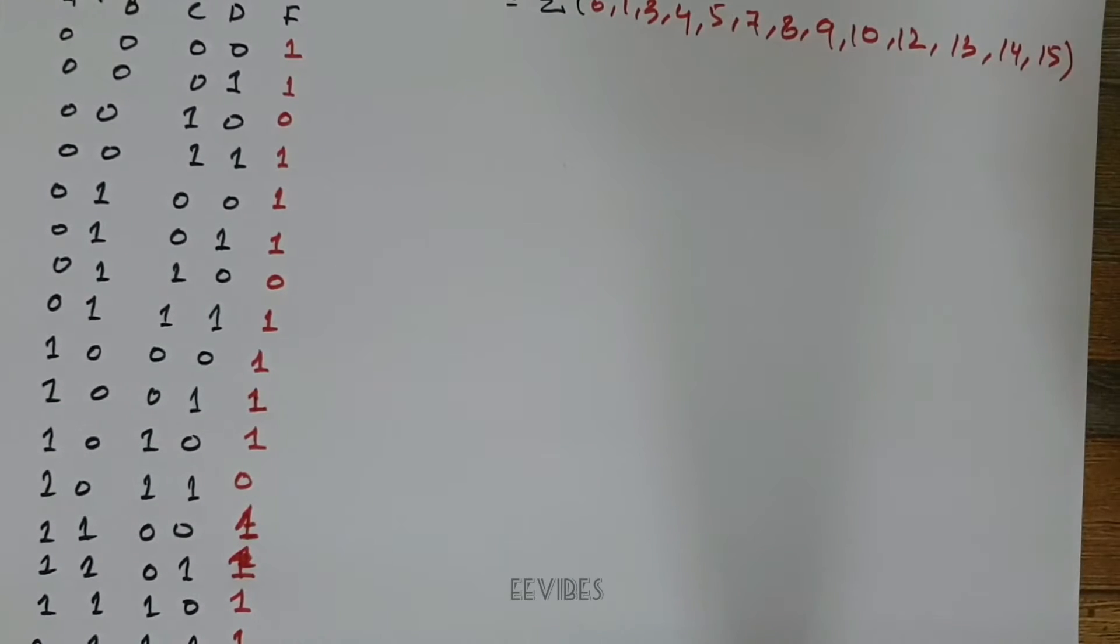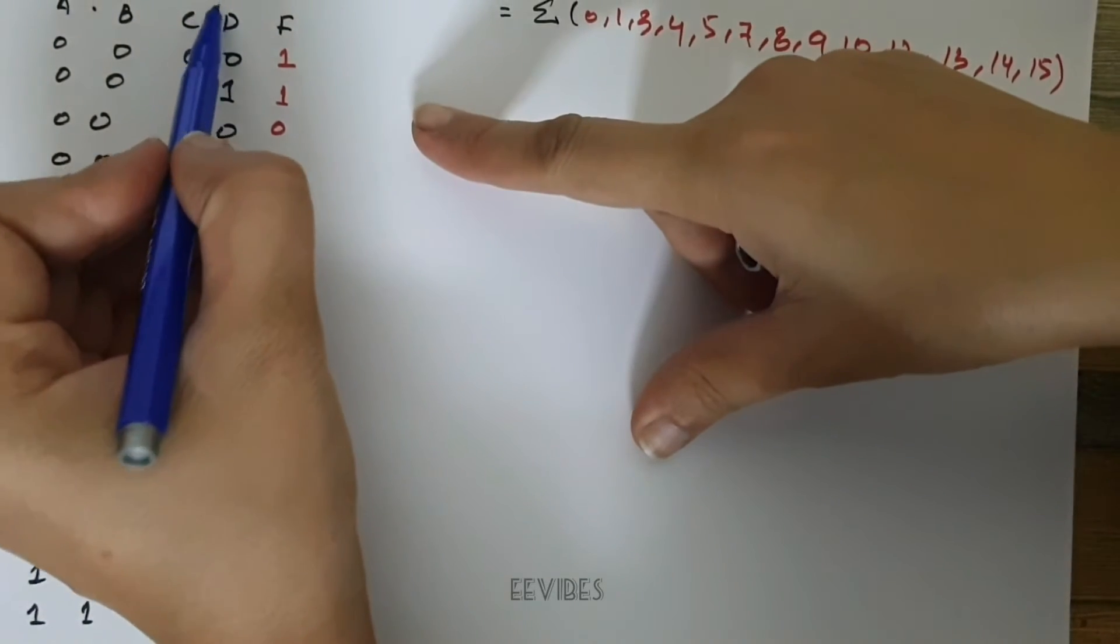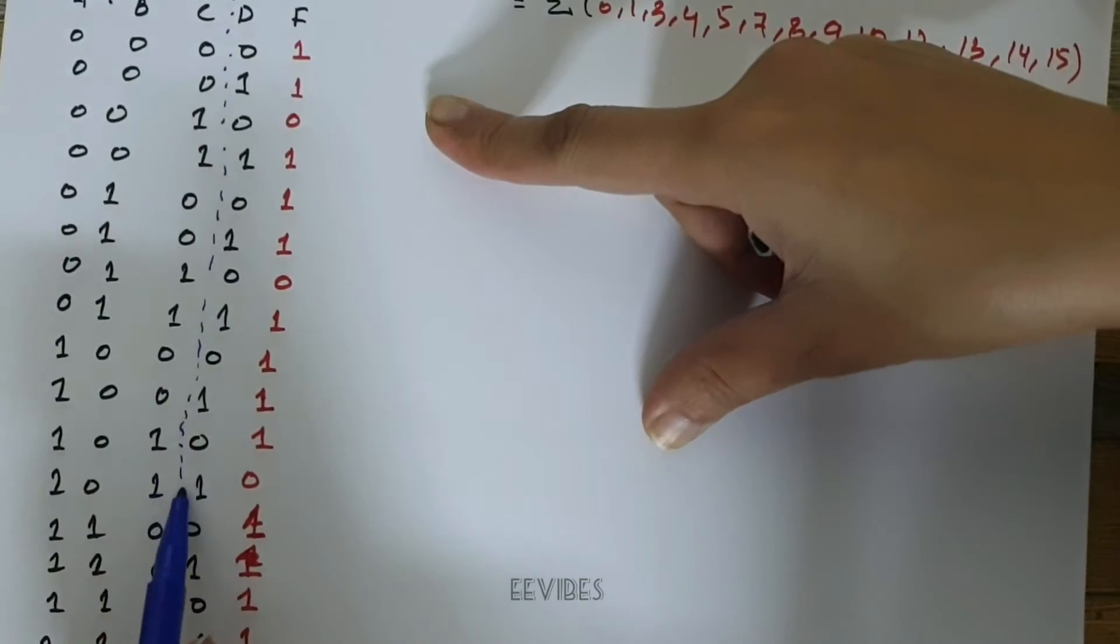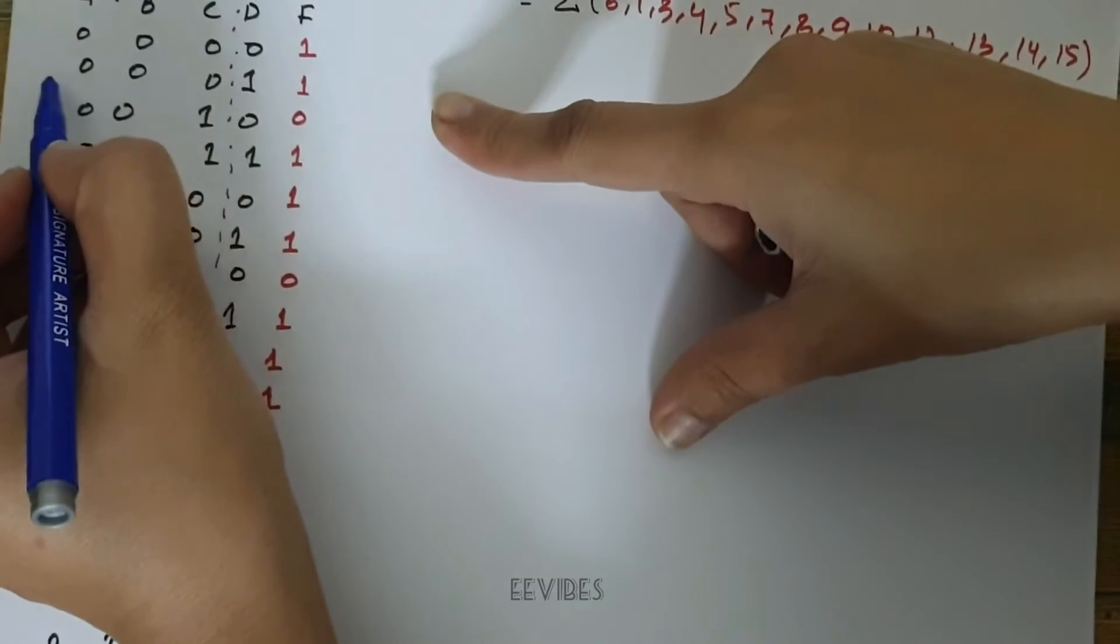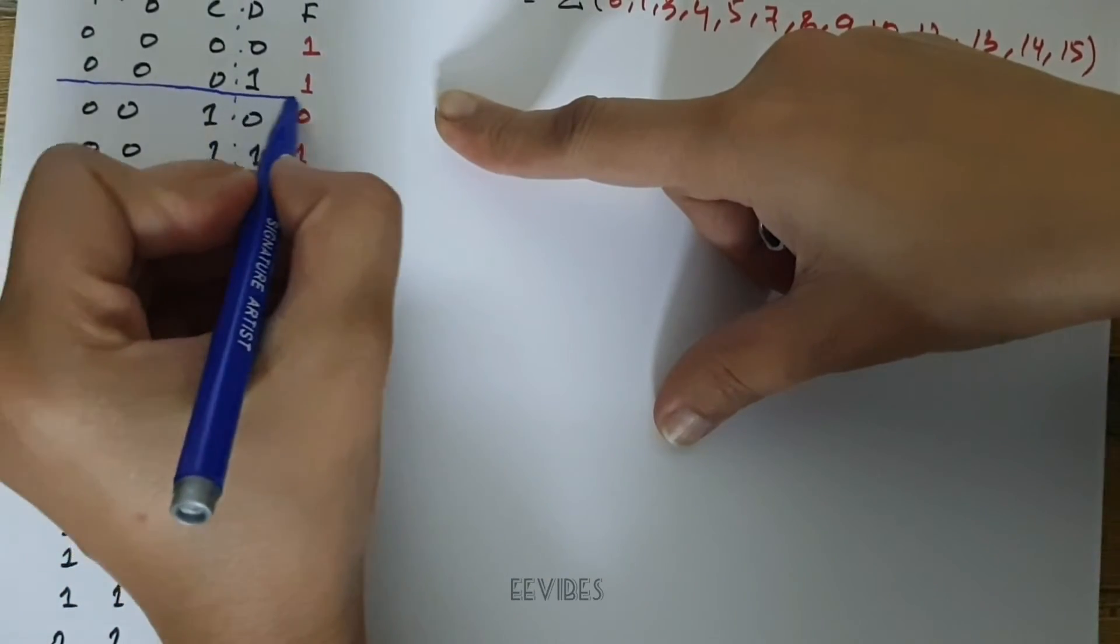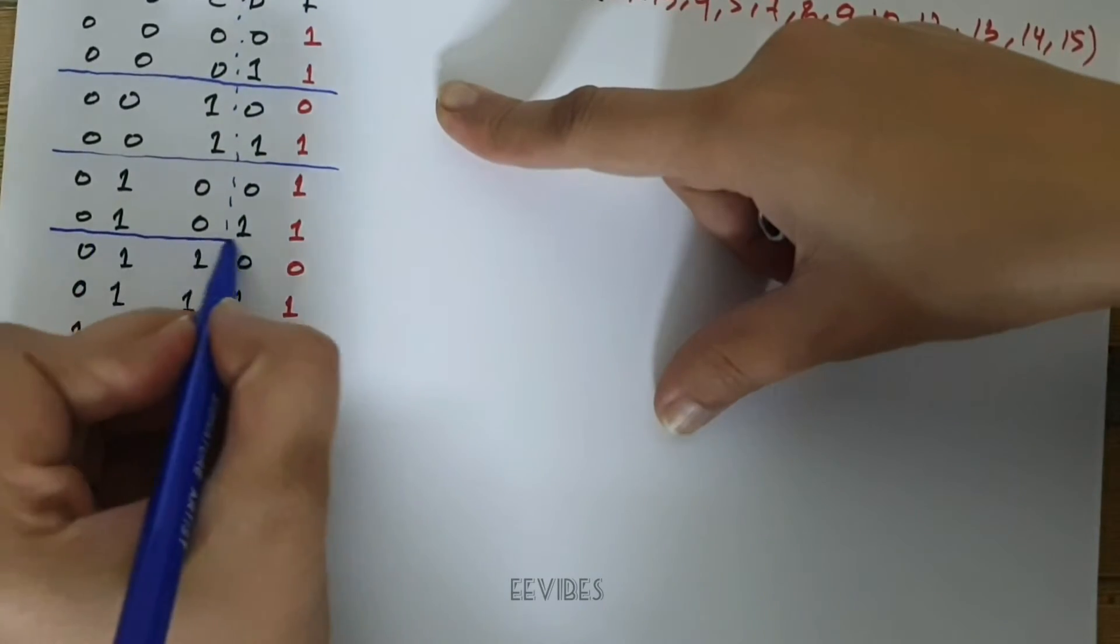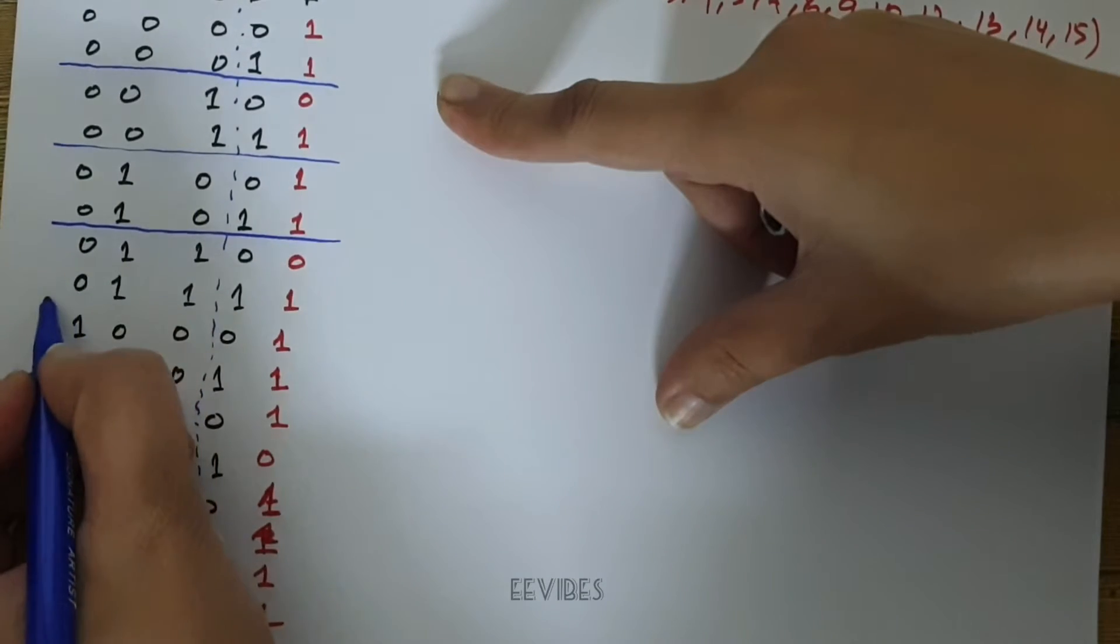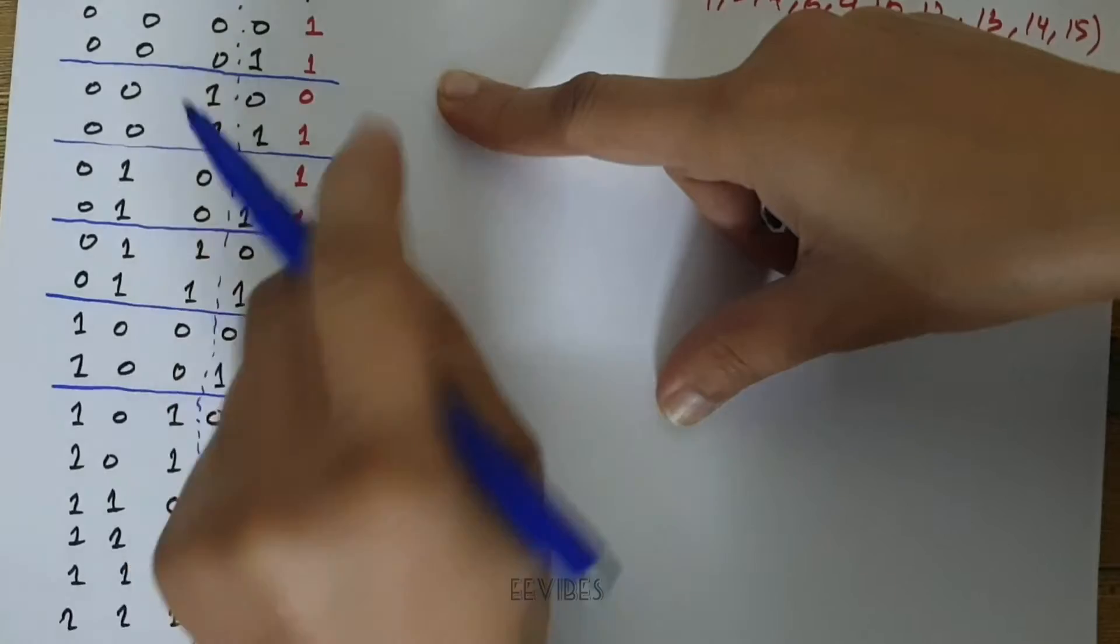While designing the function using the multiplexer, the first step is to take the last variable input variable separated from the remaining input variables, and then partition them for the same combinations. I will draw the partition